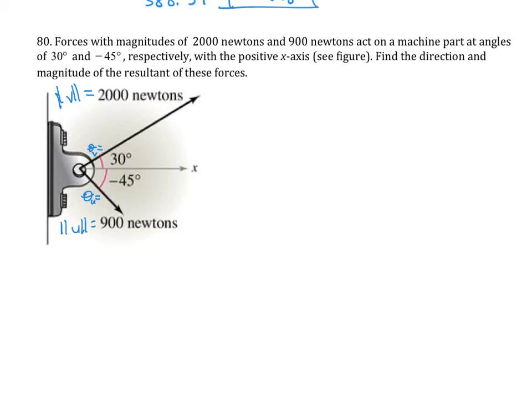So then you write the vector equals the magnitude times cosine sine. So this is going to be 2000 times cosine of 30 degrees i plus 2000 sine of 30 degrees j. And then u will equal 900 times cosine of negative 45 degrees i plus 900 sine of negative 45 degrees j.